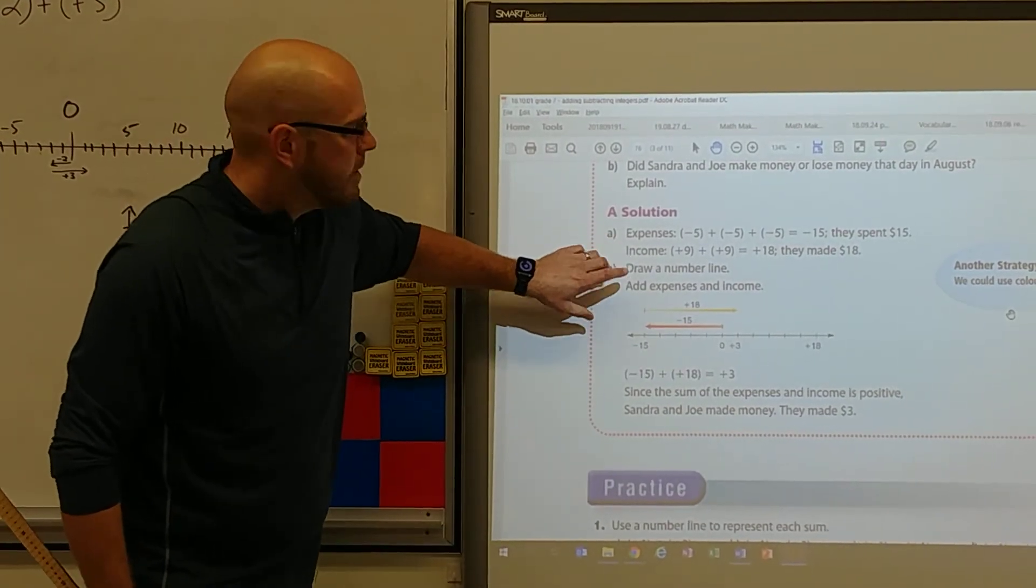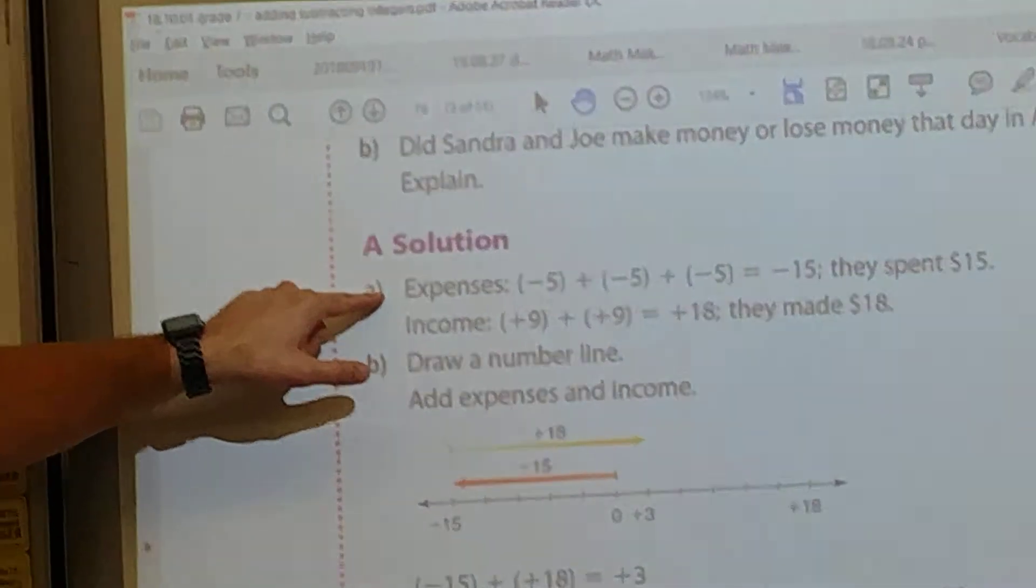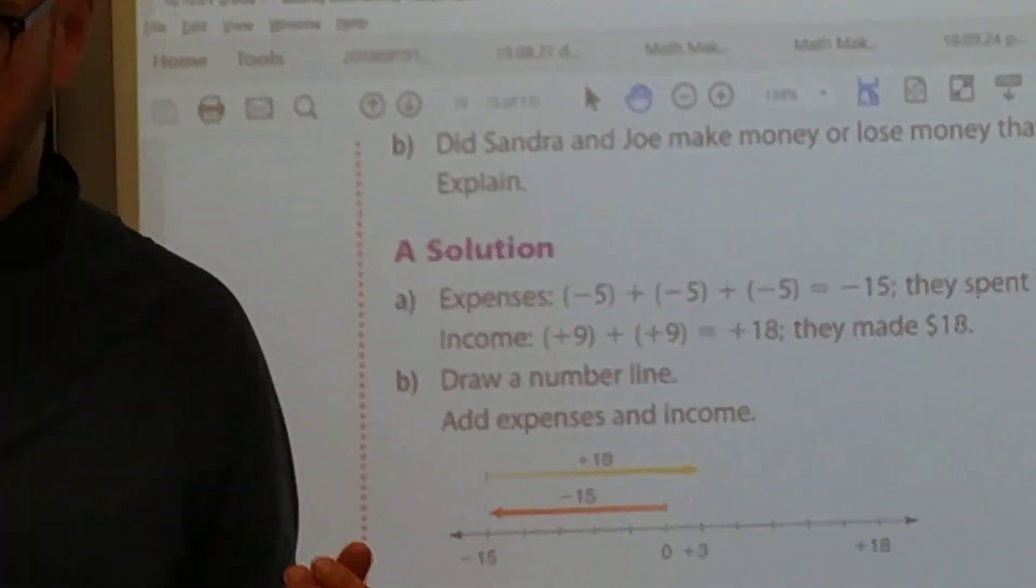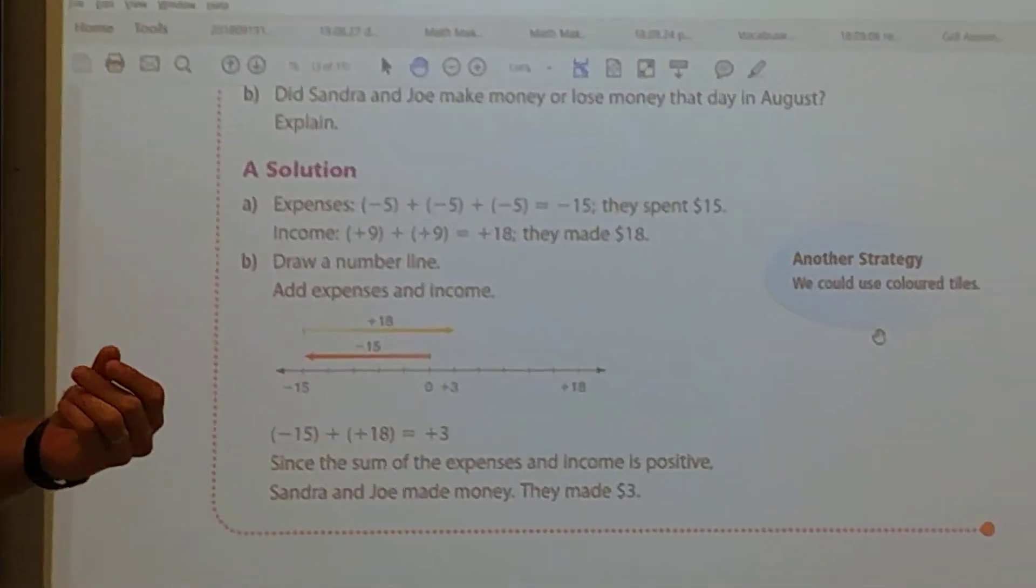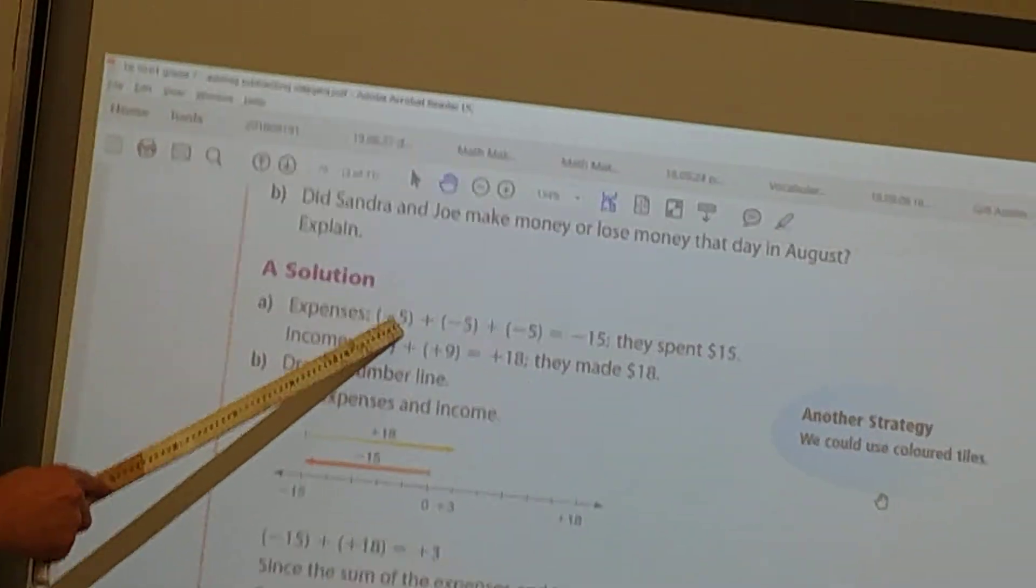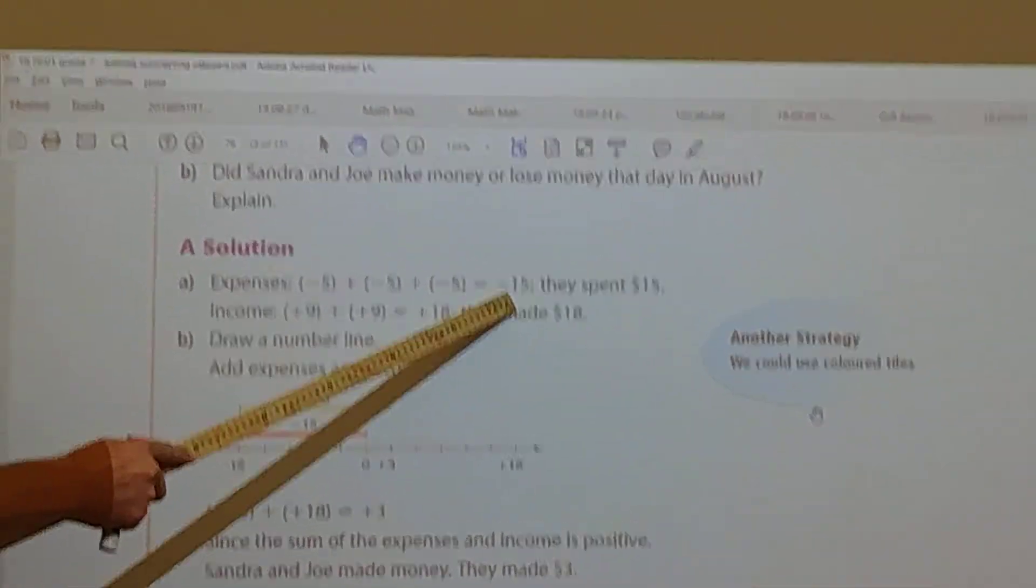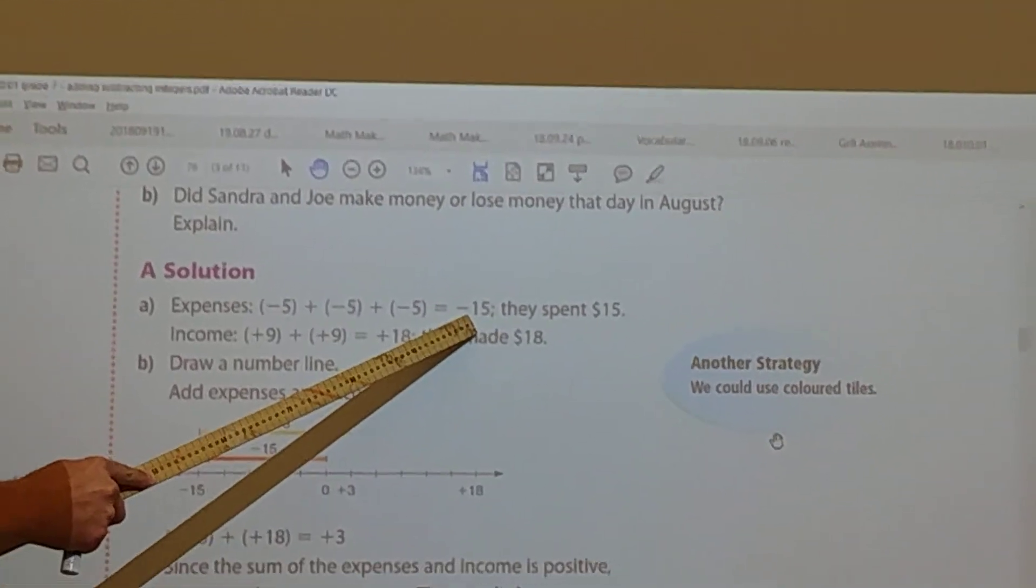This one here says expenses. Money. If something costs me money, is that up or down? Down. Spending. Spending the allowance. So spends 5 bucks plus spends 5 bucks plus spends 5 bucks. How much did I spend? Minus 15 bucks.